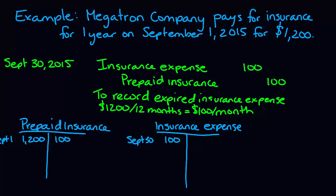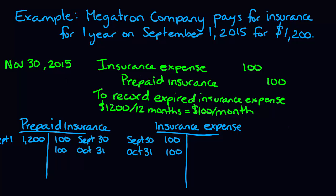It's going to look exactly the same. So now if we look at our T-accounts, we keep increasing insurance expense and decreasing prepaid insurance until the prepaid insurance balance is zero in the asset account and it's fully used up.